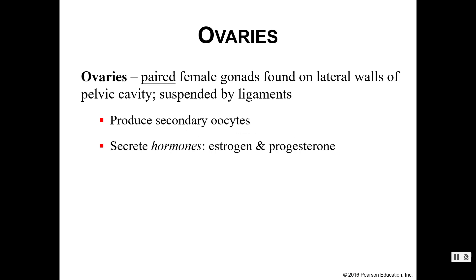In this recording we'll discuss the female internal anatomy. First we have ovaries. They are paired female gonads, similar to the testicles in males. These are found on the lateral walls in the pelvic cavity, and the ovaries themselves are suspended by ligaments to hold them in place. Their responsibilities include producing secondary oocytes, which can go on to become fertilized and develop into a fetus, and they also secrete hormones including estrogen and progesterone.